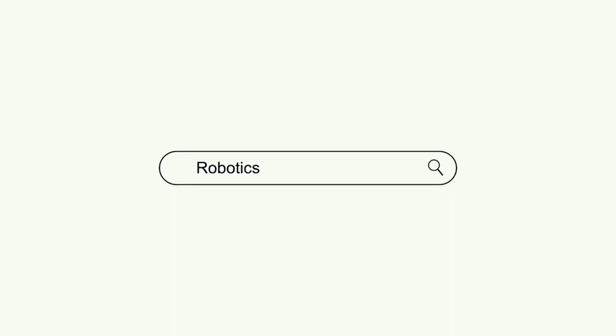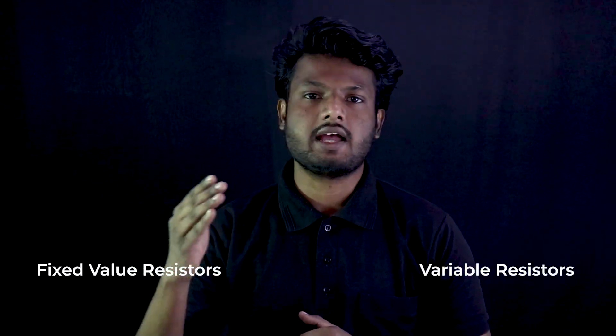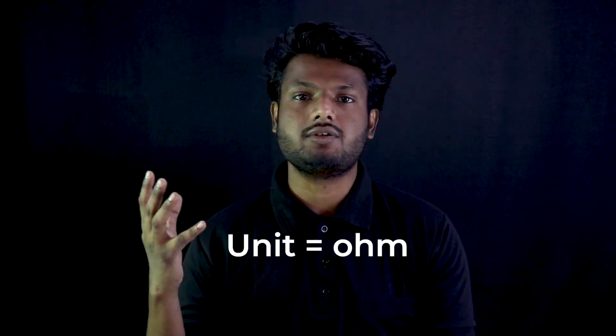So to know more about that, stay tuned. Resistors are mainly classified into two types: fixed value resistors and variable resistors. The fixed value resistors are those whose value remains constant throughout time, while the variable resistors are those whose value can be adjusted by the user. So now what is the resistance value we are talking about? The unit of resistance is Ohm, named after the German physicist George Ohm. The more the value of Ohm in a resistor, the more current it can resist.